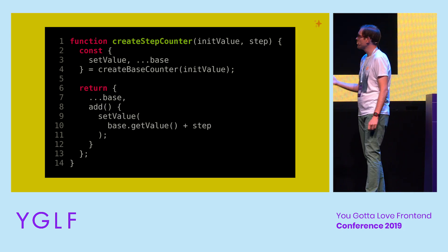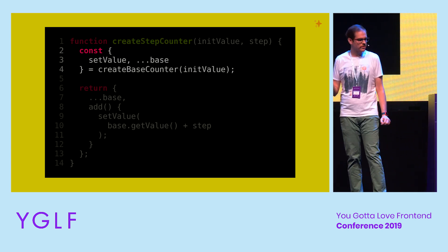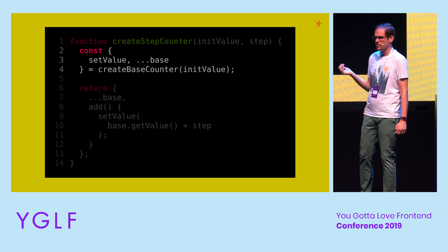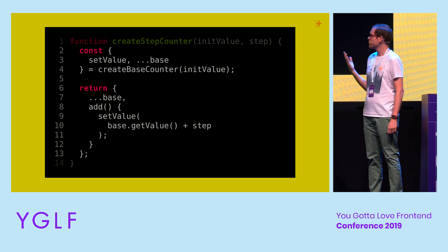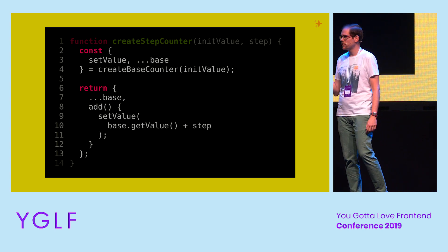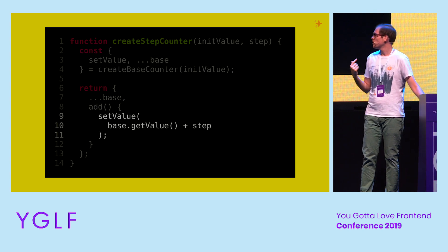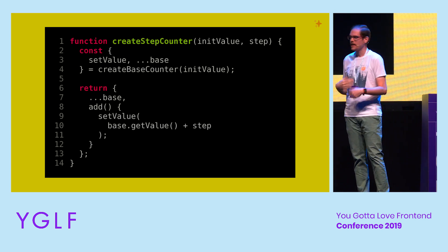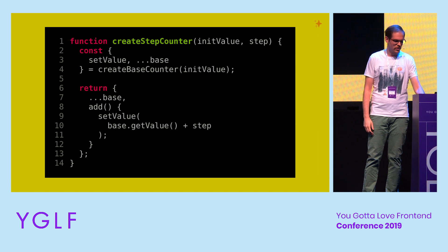You can also sort of imitate inheritance, in a different way and with a different thinking model, through simple object composition. Here, instead of the stepCounter class, we use a createStepCounter function and call another factory function that returns a baseCounter — which is like the counter before but also has a method to set the value. We only export everything but setValue, keeping that private, and use setValue internally in our add property. In the end, we get basically the same thing as before — but without the binding problem and without the other issues.